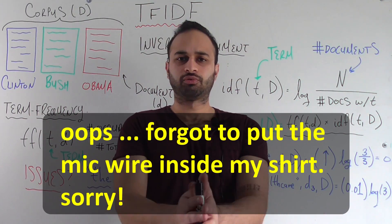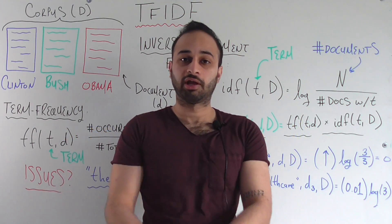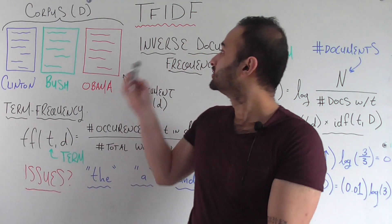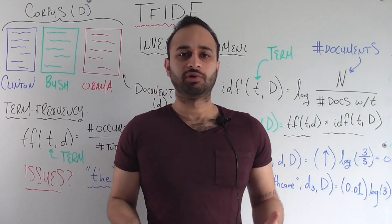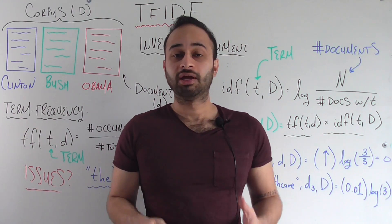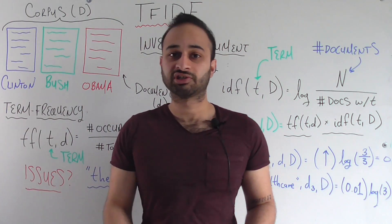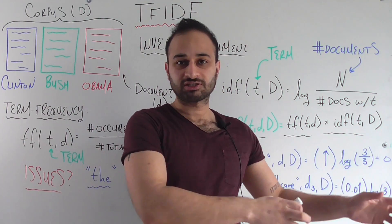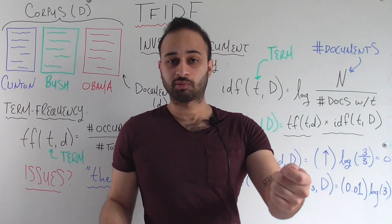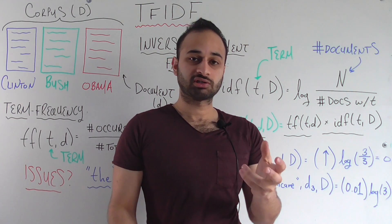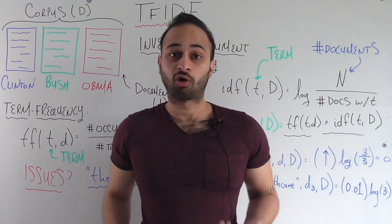Hey everyone, how's it going? I want to take this really short video just to show you a tool in text processing — a metric called TF-IDF. What it's doing is really simply answering the question: if I have a collection of documents, which is officially called a corpus — a bunch of different documents usually relating to the same subject area — then I want to get a measure, some kind of number that tells me how important is a given term or word for any of the documents in my corpus.